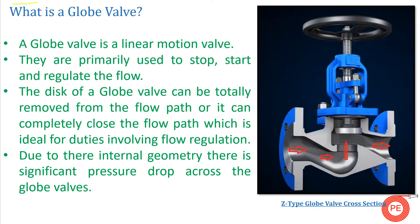So what is a globe valve? We all know that valves serve different purposes in the industry — sometimes they are used for on/off, sometimes for throttling, sometimes for non-return flow. To serve these different requirements, one type of valve is the globe valve. A globe valve is basically a linear motion valve, meaning the motion of the stem will be linear — it will go up and down.